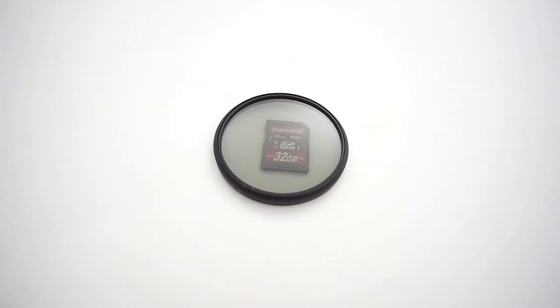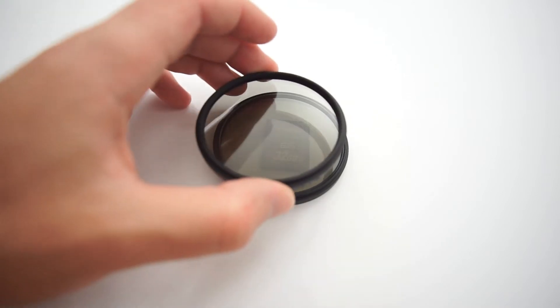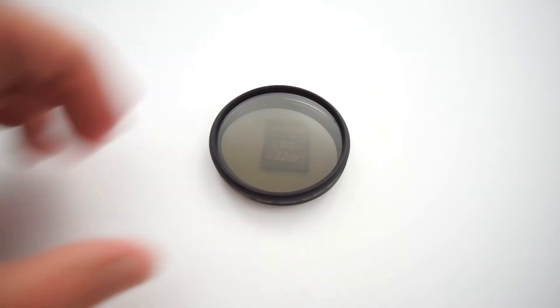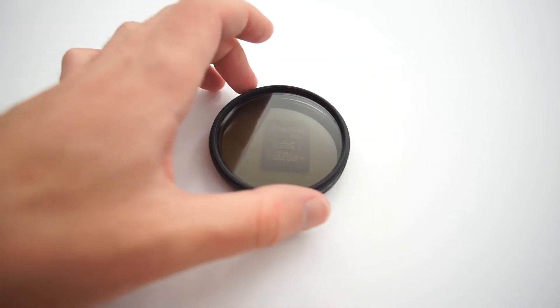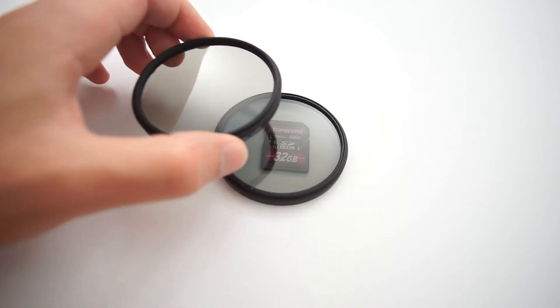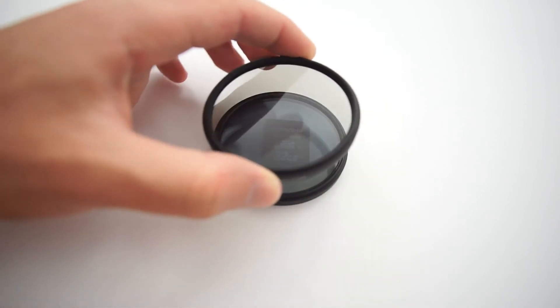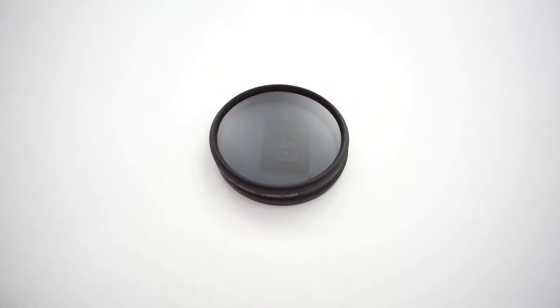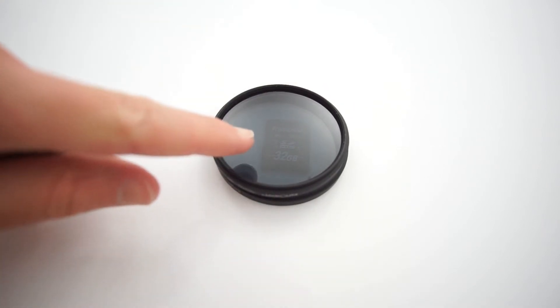First problem is polarization direction. CPL filters work properly only in one direction. When we place filter in wrong direction instead of dimming we can see color shift from warm to cold and vice versa. Not very useful, at least for me.